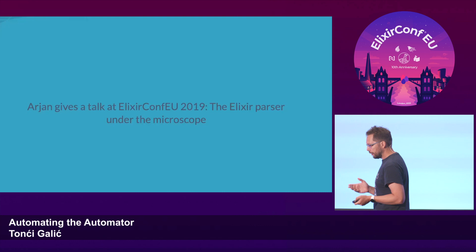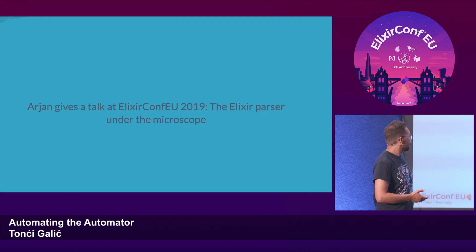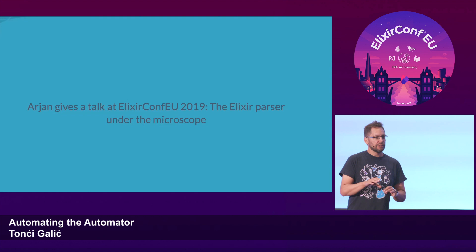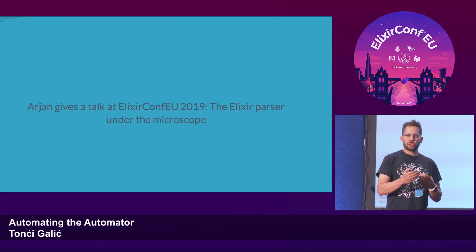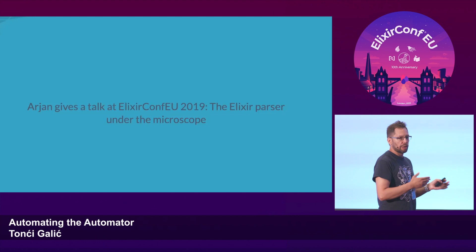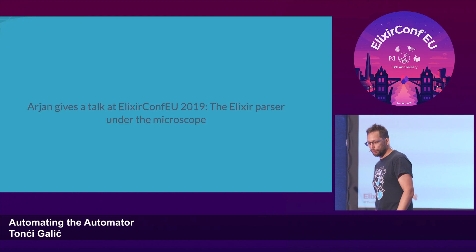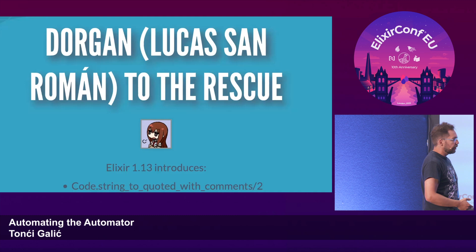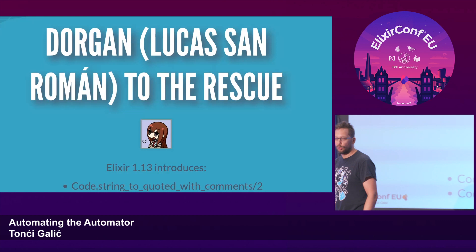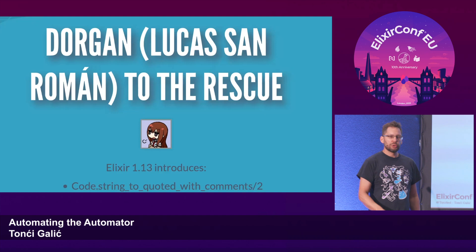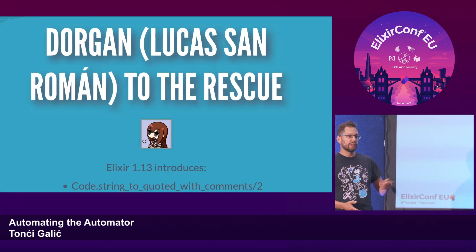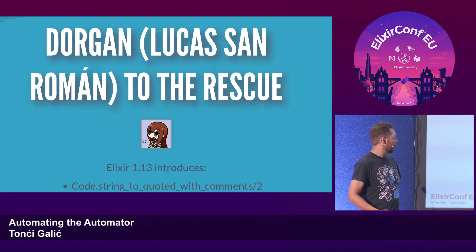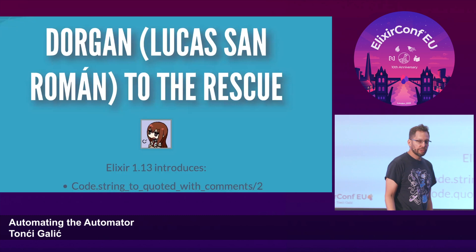We tried to marry the two but didn't quite succeed. Arjan gave a talk about it in 2019, highlighting the difficulties, and he and Jose had a discussion about how to solve it. A few years later, Dorgan — his real name is Lucas — came along. I mentioned the problem to him and asked how he'd solve it. Being the hero he was, he went ahead, had a discussion with Jose, and actually wrote functions for the latest Elixir version which solved my problems. So if you're watching, thank you very much.